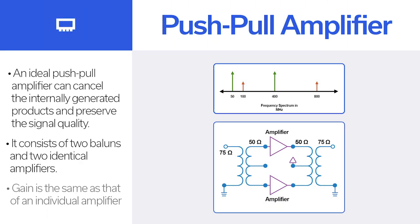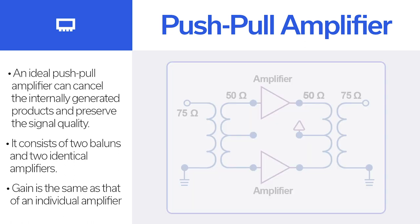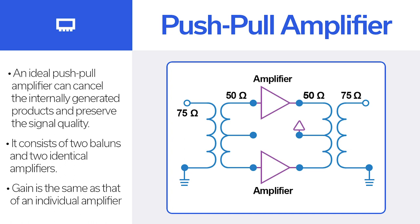An ideal push-pull amplifier can cancel the internally generated products and preserve the signal quality. It consists of two baluns and two identical amplifiers. When a signal is applied to the input of the first balun, the output signal from that balun consists of two signals of equal amplitude and out of phase. These signals are amplified and combined in the output balun. The gain of a push-pull amplifier is the same as that of an individual amplifier, whereas the output power is twice that of an individual amplifier. A push-pull connection is frequently used for combining the power of two individual amplifiers.